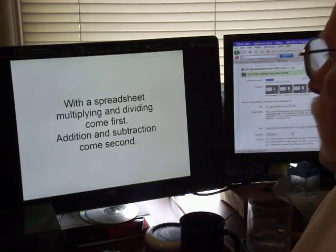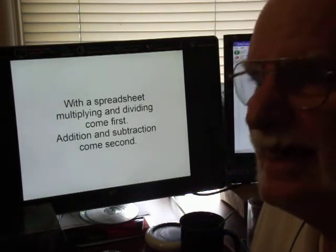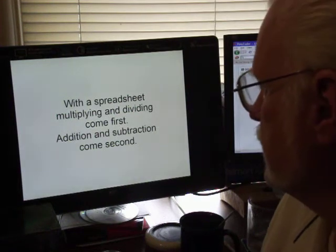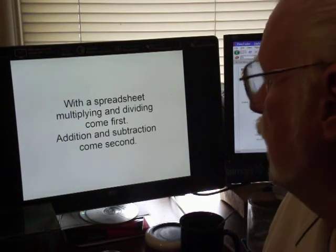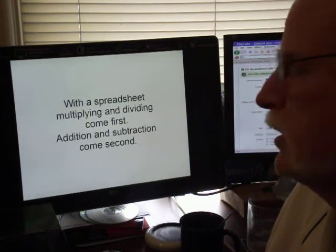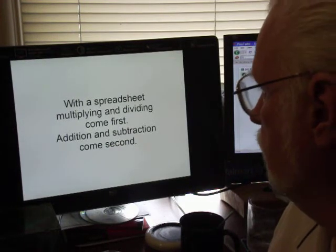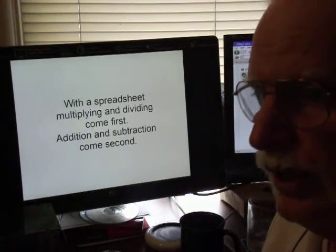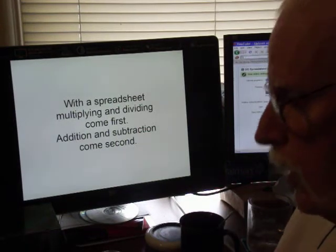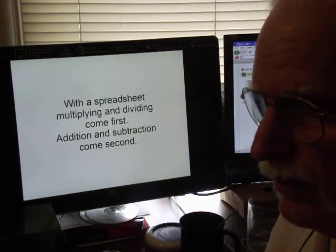With a spreadsheet, multiplying and dividing come first, no matter where it is in the equation. After the multiplying and dividing is done, then the addition and subtraction comes second. Now when there is more than one multiplier or division, it goes from left to right in order. But when there are two on the same level, then we take it left to right.